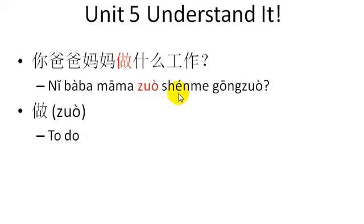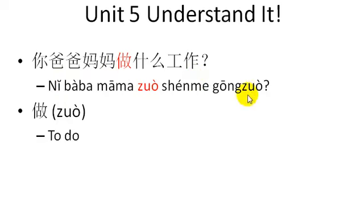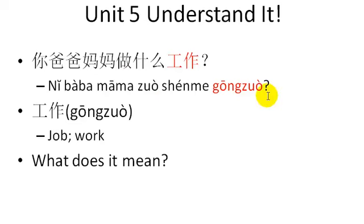你爸爸, 妈妈, 做什么? 工作. 做 means to do, to do something. Think about that: 你爸爸, 妈妈, 做什么? Just don't even worry about this 工作 — you should be able to sort out the meaning of this whole sentence. 工作 means work or job. 你爸爸, 妈妈, 做什么? 工作.